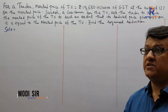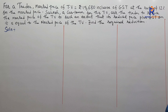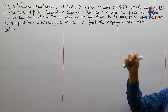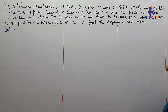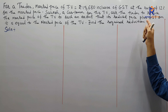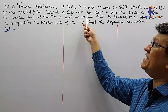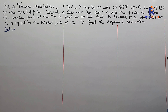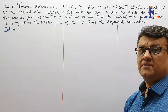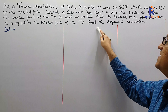Let's see what this question is saying. The marked price of a television set is rupees 15,680, inclusive of GST at the rate of 12%. Suresh, a customer, asked the trader to reduce the marked price to such an extent that the reduced price plus GST on it should be equal to the marked price. Find the required reduction.